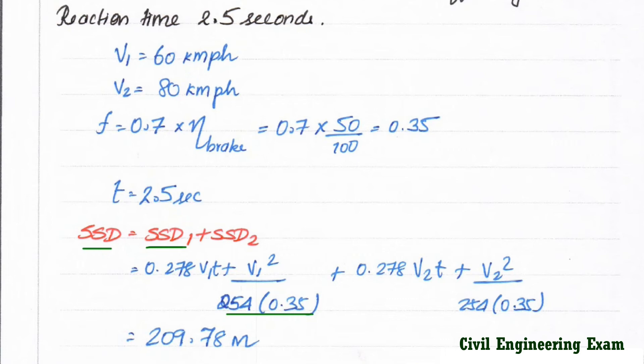Now we are going to substitute all the values over here. V1 equal to 60 and V2 is equal to 80. That is given. And T is equal to 2.5 seconds that is also given. Solving this we got the value of 209.72 meter.